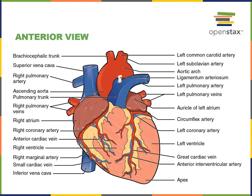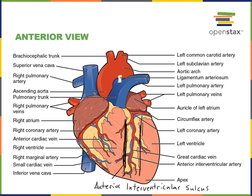There is a groove on the anterior of the heart located in between the left and right ventricles. This groove is known as the anterior interventricular sulcus, and it contains the great cardiac vein as well as the anterior interventricular artery.